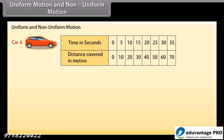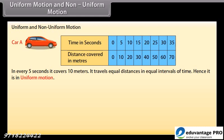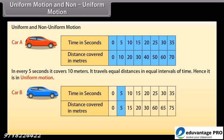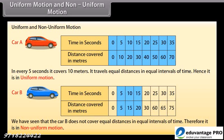Uniform and non-uniform motion. To understand these, let's take an example. Car A covers 0 meters in 0 seconds, 10 meters in 5 seconds, 20 meters in 10 seconds — it covers equal distances in equal intervals of time, hence it is in uniform motion. Car B covers 5 meters in 5 seconds, 15 meters in 10 seconds, and 20 meters in 15 seconds — it does not cover equal distances in equal intervals of time, therefore it is in non-uniform motion.